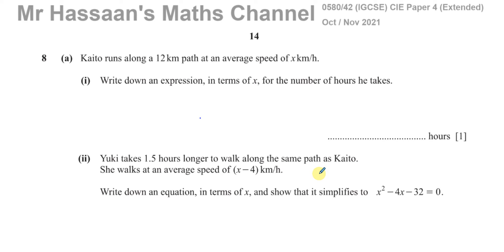Welcome back to Mr. Hassan's math channel. This is question number eight from the October/November 2021 IGCSE Cambridge Paper 4, Variant 2, from the 0580 syllabus. This question is about somebody called Cato who runs along a 12-kilometer path at an average speed of x kilometers per hour.